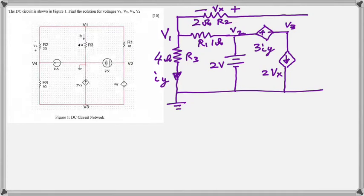Because we follow around and we see that we have the 3iY there with the current dependent voltage source, and then we have reached V3 and we have a voltage dependent current source going to ground.